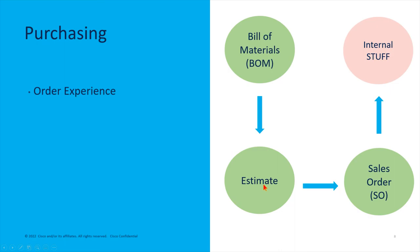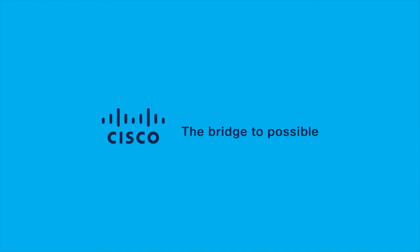Based on your answer to the estimate, if you say yes, they'll generate an official contract — a sales order — that goes out to you, which your procurement office then submits. After that, there's a whole lot of stuff that happens internally, and eventually you're going to get some boxes at your doorstep. That's a quick overview of the purchasing process. We'll get into more detail later, and point of context is next.